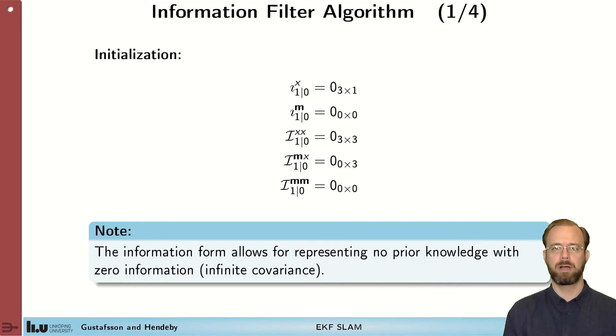The information filter form has another benefit and that's that it's possible to encode that we have no information about the state at all. That's by simply setting the information to zero. In the covariance case we would have to set the covariance to infinity which is not numerically stable and a good solution. But in the information form we can actually say that we know nothing about this. So we make use of that especially for the map which we know nothing about.